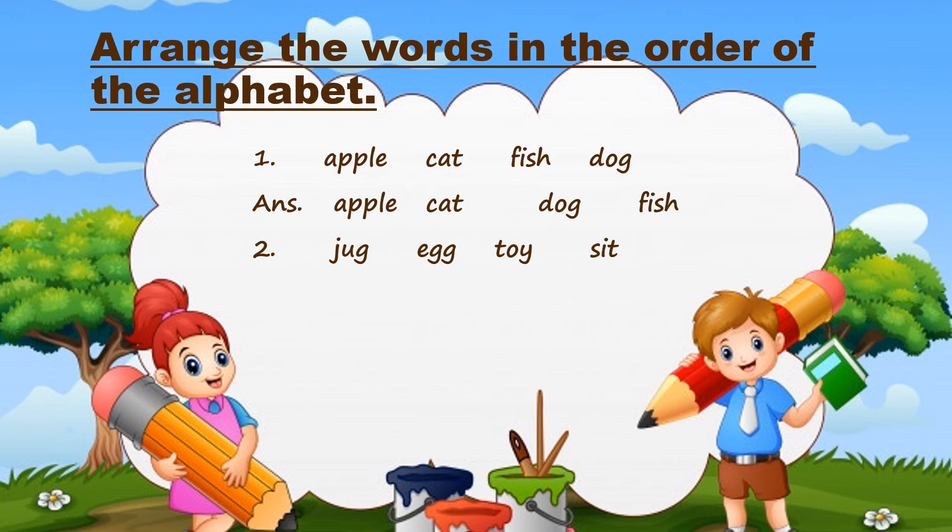Number 2: Jug, Egg, Toy, Sit. So, A is not there, B is not there, C is not there, D is not there. There is the letter E. So, the first word will be egg. Then, we will be jug. And then, we will be sit. And then, we will be toy.